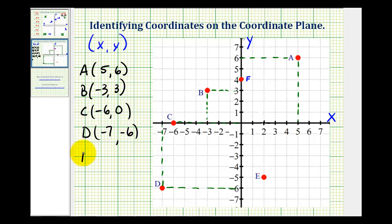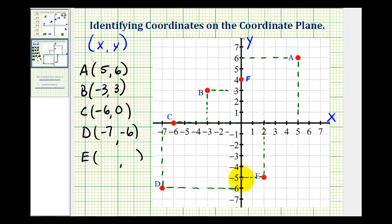And then for point E, if it goes straight to the x-axis, it intersects the x-axis at positive two. And if we draw a segment straight to the y-axis, it intersects at negative five. So the x-coordinate is positive two and the y-coordinate is negative five.